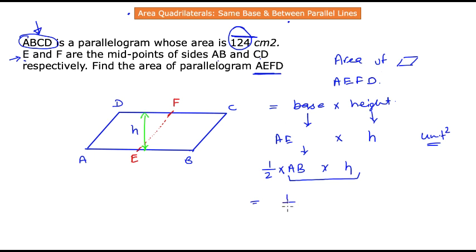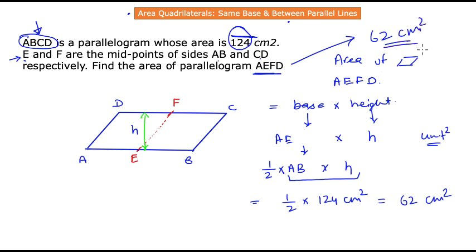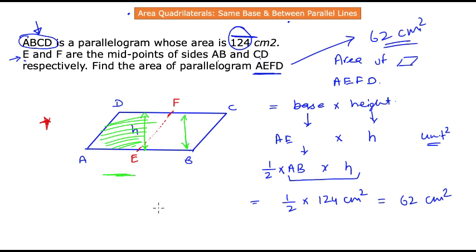Therefore, the area of parallelogram AEFD equals ½ × 124 = 62 cm². This is the required area. This example nicely demonstrates how to compute the area of one geometric figure relative to another when they share a common base and the same height, or lie between the same parallel lines.